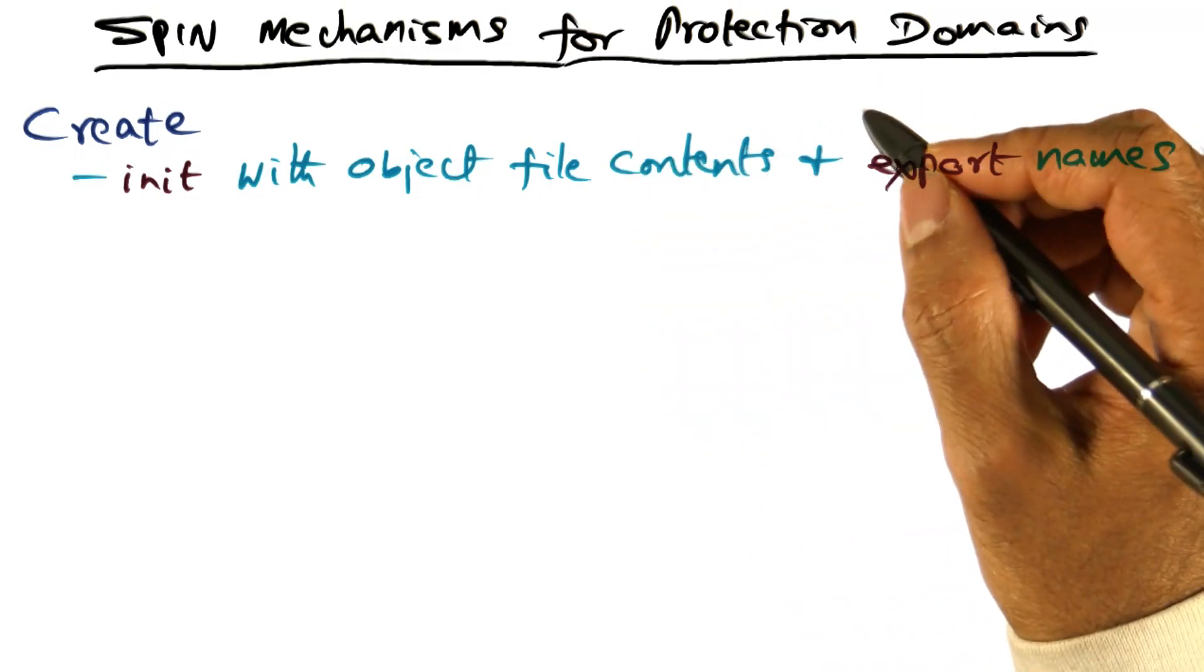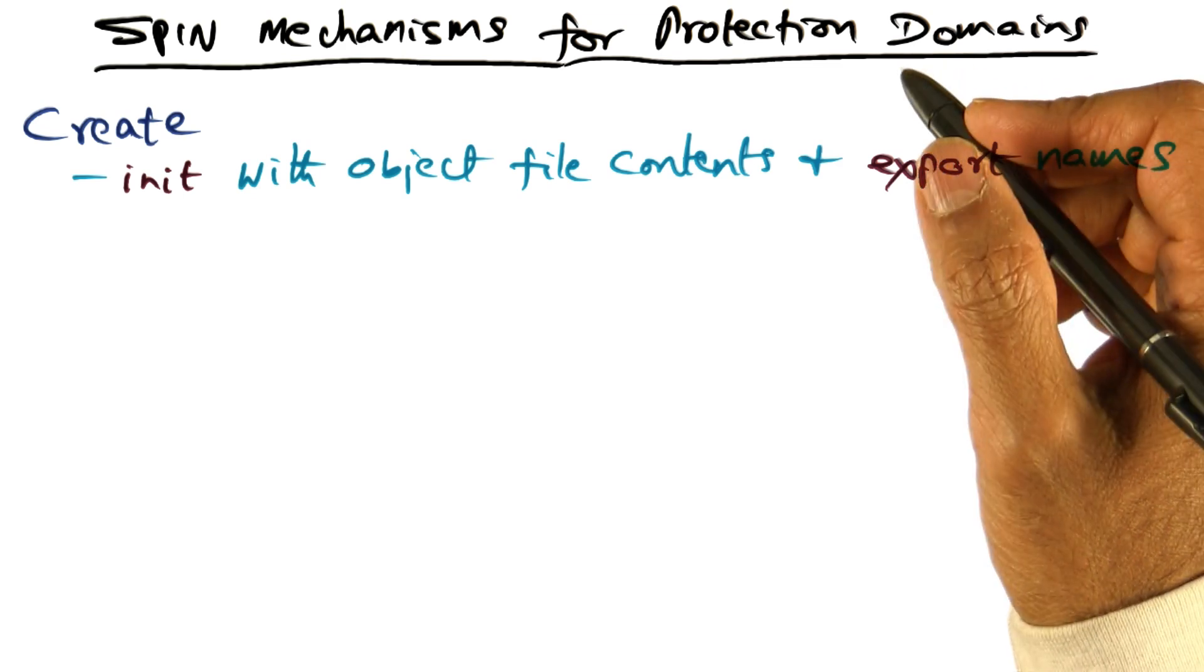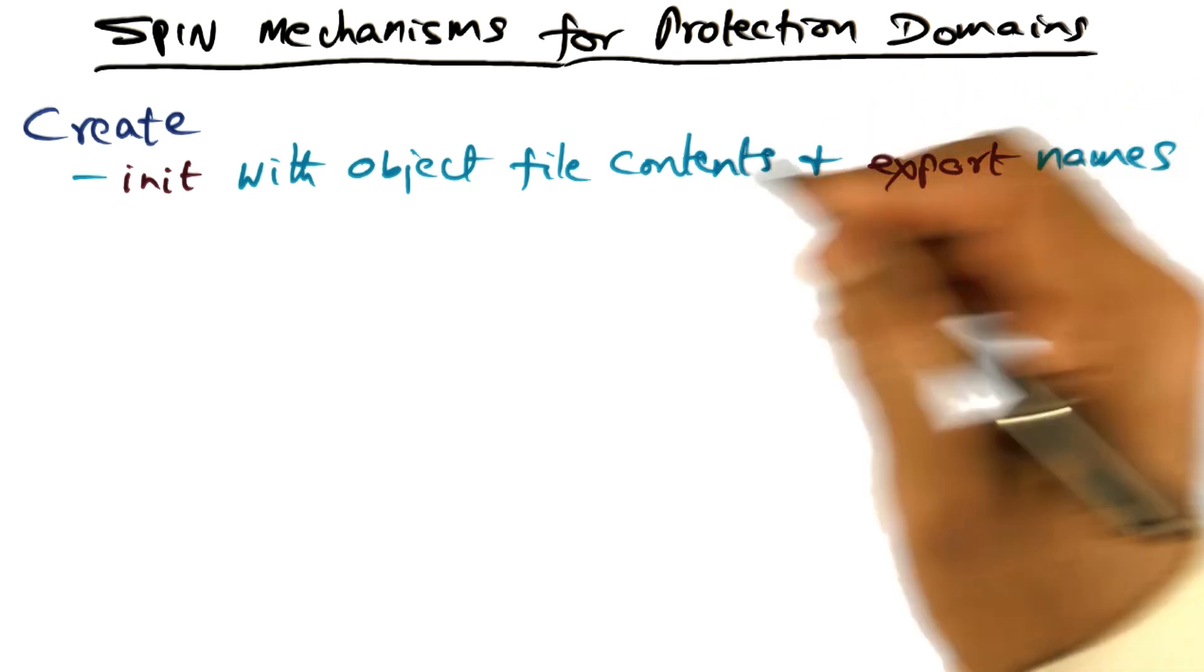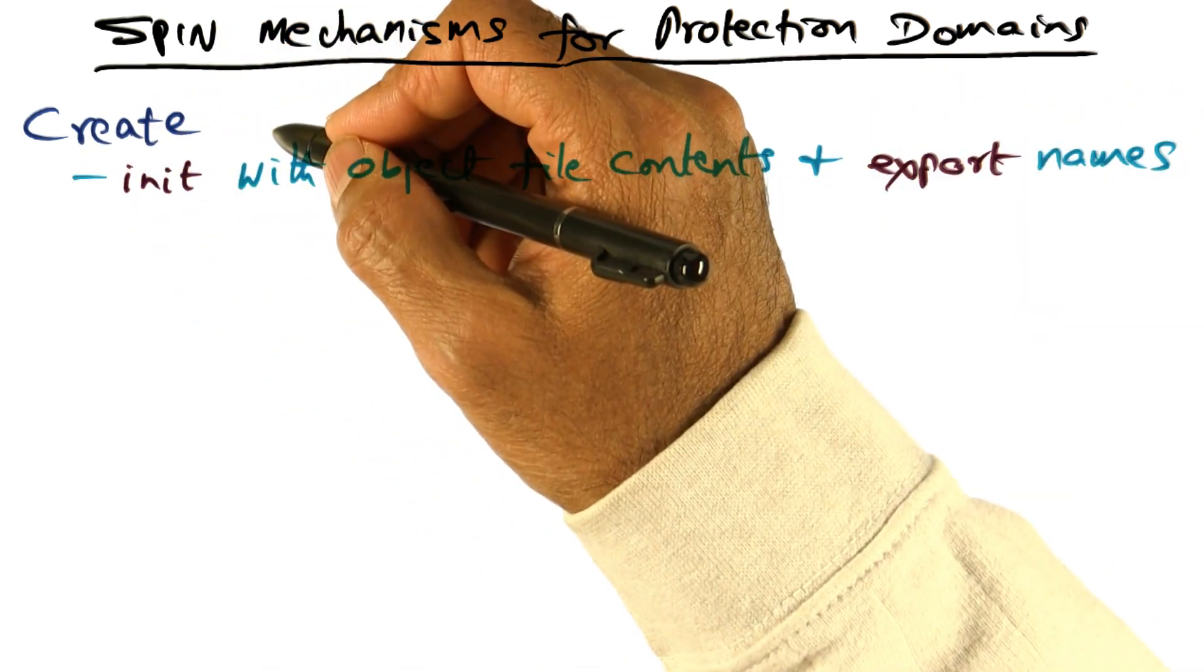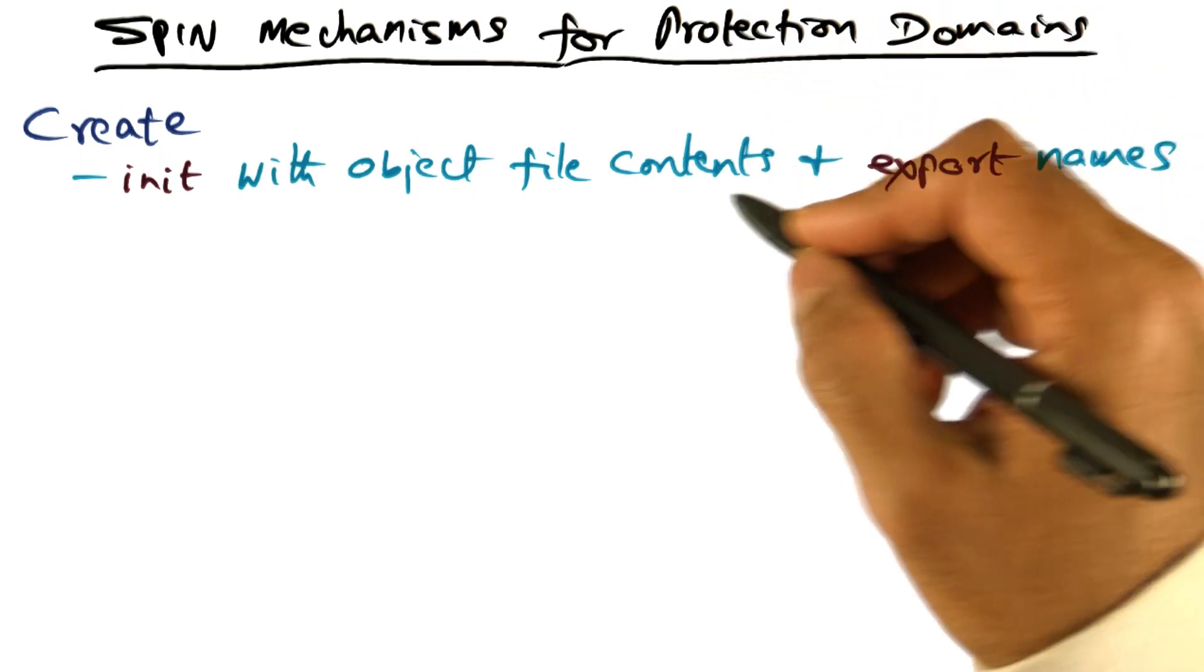There are three mechanisms in SPIN to create protection domains and use them. The first one is the create call that allows creating a logical protection domain.